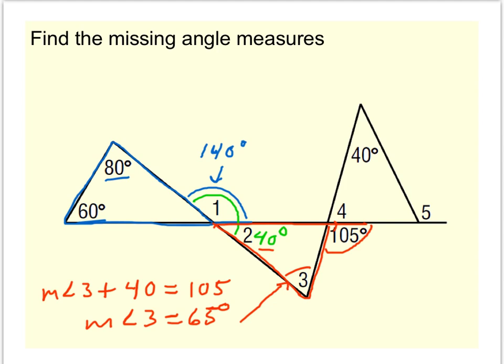Now, to find, let's say we want to find angle 4 next. I see angle 4 and 105 degrees form another linear pair. So that means angle 4 must be 75 degrees. So I've got 75 is angle 4, and angle 40 degrees.